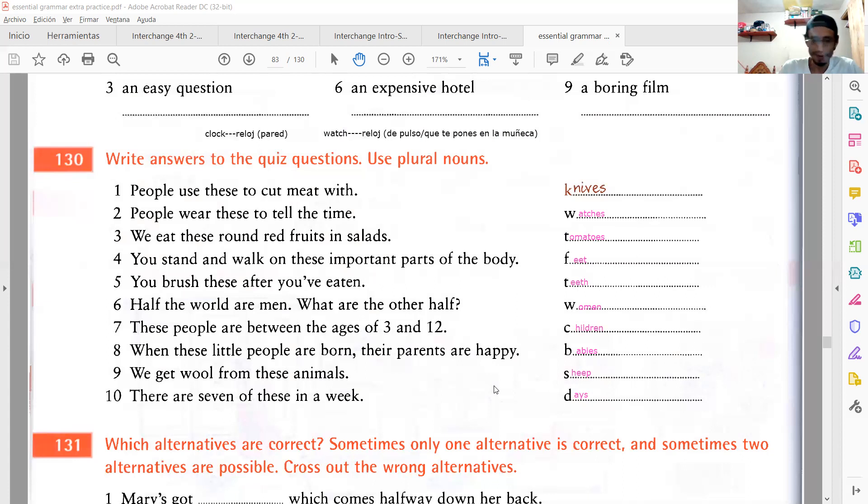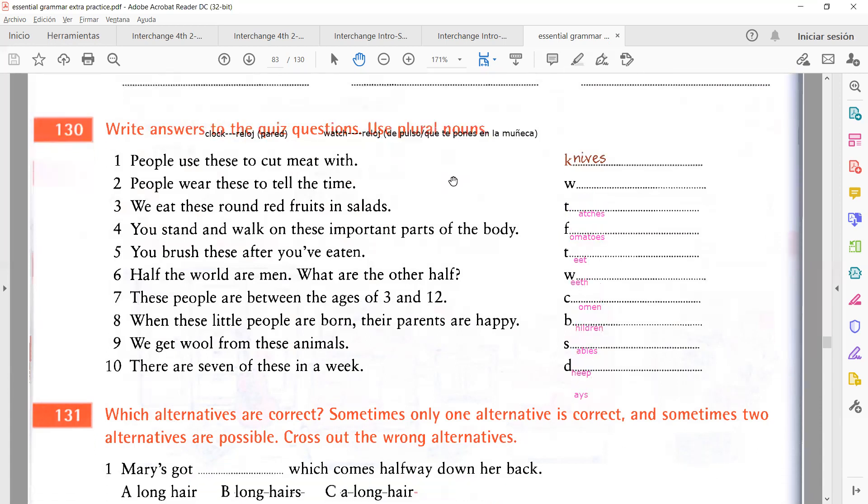Tenemos knives, watches, tomatoes, feet, teeth, women, children, babies, sheep, days. Ahí está el ejercicio del uso de los plurales y estamos aplicando la regla de cómo pluralizar en inglés. Quieres captura de este para que lo leas? Para que te la mande. Sí. Va que va. Te la estoy enviando ya. Ese es el problema de las herramientas de Zoom que no me dejan luego controlar el ratón adecuadamente. Pero ahí va.